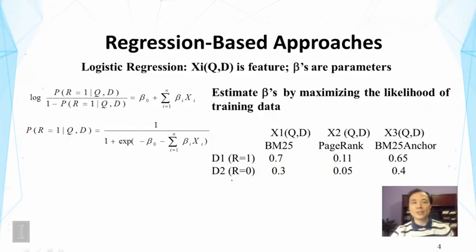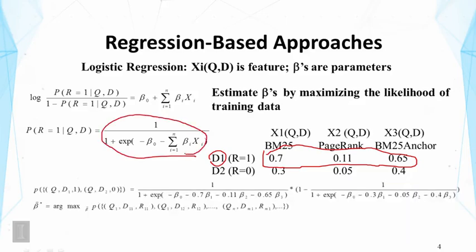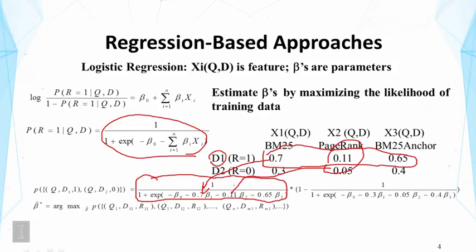Let's see how this can be mathematically expressed. This is similar to computing the probability of a document, except we're talking about the probability of relevance — 1 or 0. The probability of D1 being relevant given its feature values is just this expression with the xi's replaced by the specific values; for example, 0.7 and 0.11 are plugged into the corresponding positions. The beta values are still unknown, but this gives us the probability that this document is relevant under the assumed model.